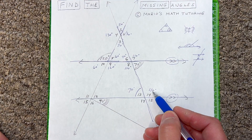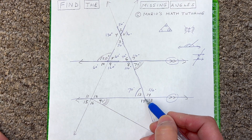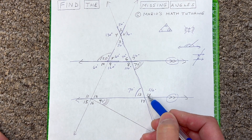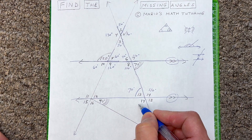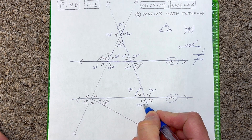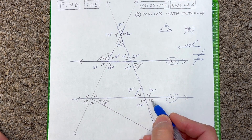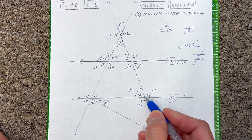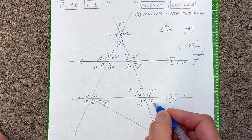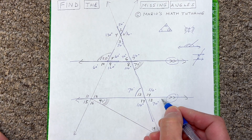Continuing on: if angle 14 is 110, we know angle 17 is 110 because angles 14 and 17 are vertical angles. And angles 13 and 18 are vertical angles, so angle 18 is 70 degrees.